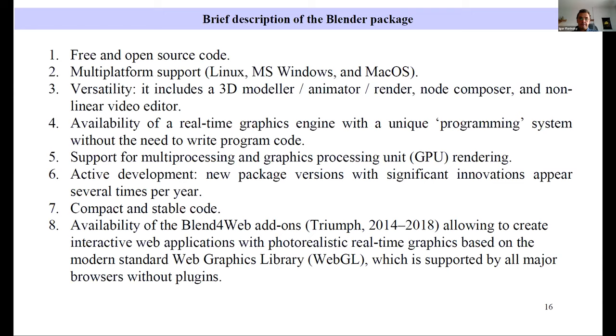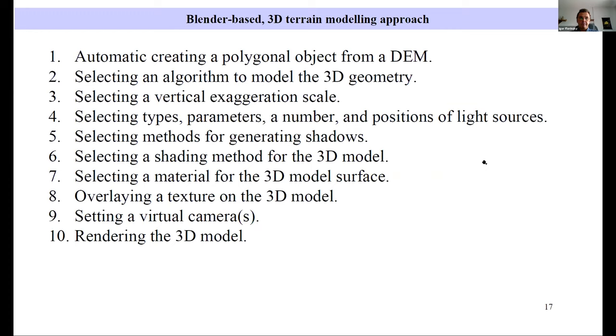Here you can see 10 key steps of our approach. First, automatic creation of polygonal object from DEM. Second, selecting an algorithm to model the 3D geometry. Selecting vertical exaggeration scale. Selecting types, parameters, number, and positions of light sources. Then selecting method for generating shadows. Next, selecting a shading method for 3D model. It's different. There are differences between shadows and shading. Selecting a material for 3D model surface. Overlaying a texture, geomorphometric texture on the 3D model. Setting virtual cameras. And finally rendering the 3D model.